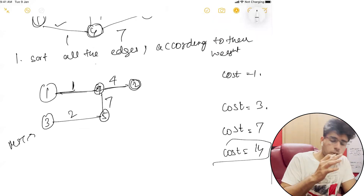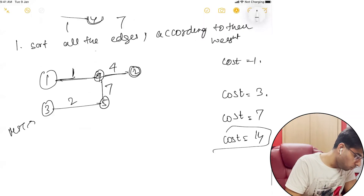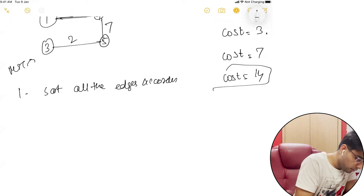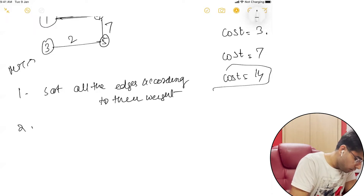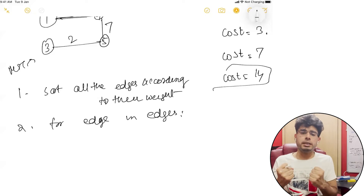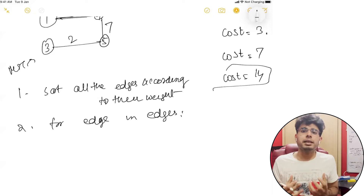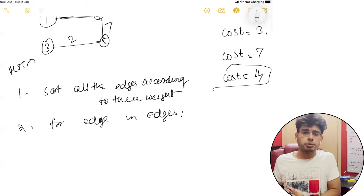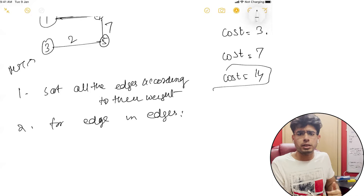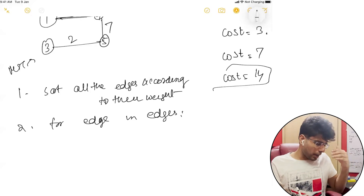So, there are basically two things that we need to do. One: sort all the edges according to their weight. I'm writing the pseudocode here — I don't want to do language-specific things. If you want code, I'll attach it in the description. Comment below if you need it. Kruskal's algorithm is very, very straightforward — just sort the edges according to the weight.